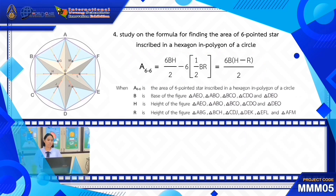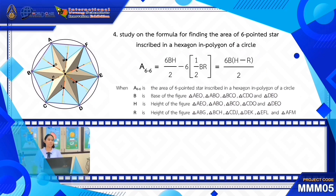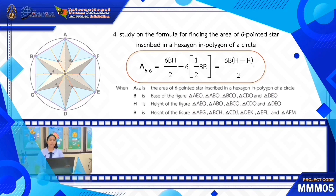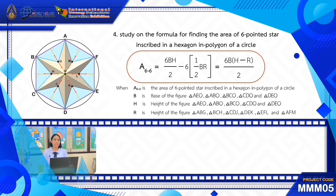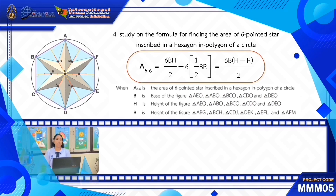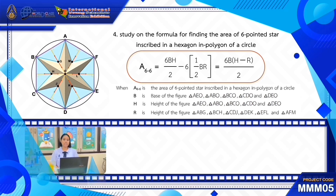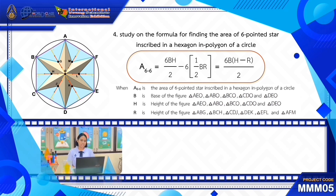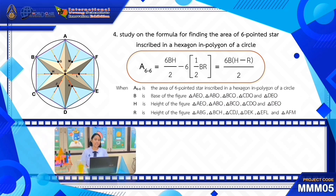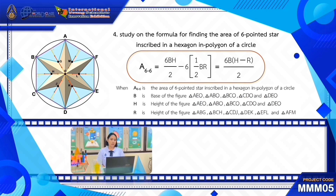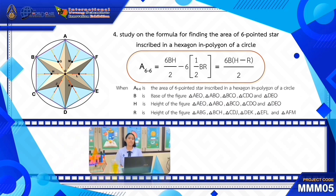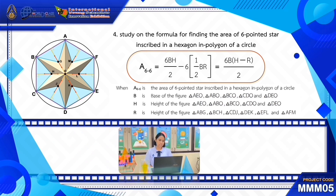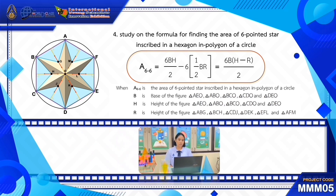The study on the formula for finding the area of a six-pointed star inscribed in a hexagon in a circle: A6 equals one-half times 6 times B times H, minus 6 times one-half times B times R. Where A6 is the area of the six-pointed star inscribed in the hexagon in a circle.